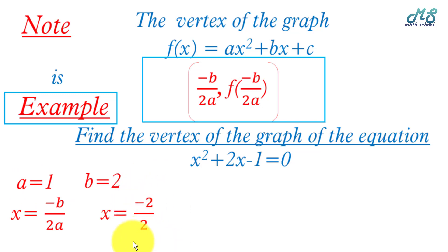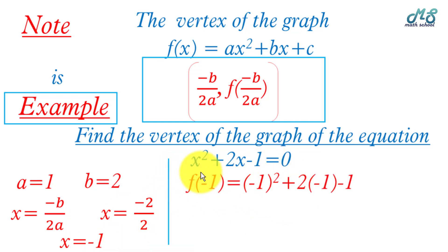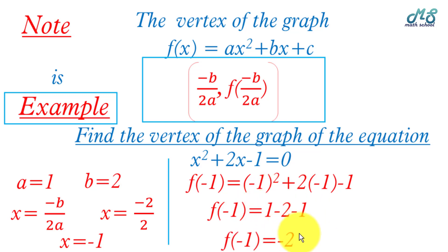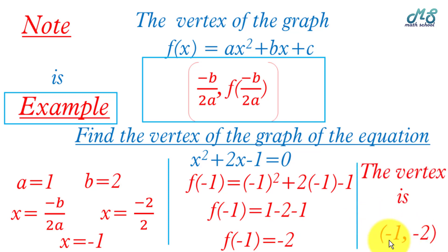To find the y-coordinate, compute f of negative 1: negative 1 squared plus 2 times negative 1 minus 1, which equals 1 minus 2 minus 1, equals negative 2. So the vertex of the graph is the point negative 1 comma negative 2.